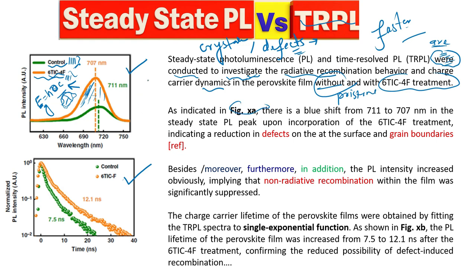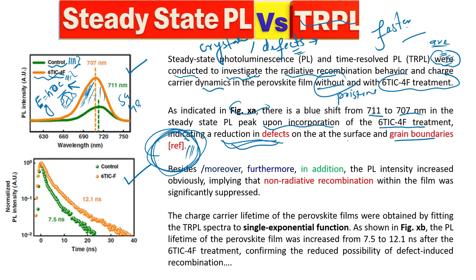As indicated in Figure XA, there is a blue shift from 711 to 7XX nanometer in the steady state PL upon incorporation of this treatment. This basically indicates a reduction in defects at the surface and grain boundaries. You must give references here — if you don't, nobody will believe you, because the reader needs to know how you established that a blue shift means a reduction in defects. You can also use transition words like 'furthermore,' 'in addition,' or 'moreover.'